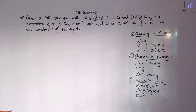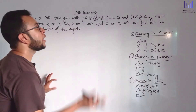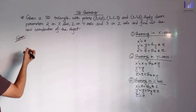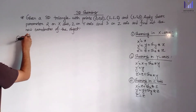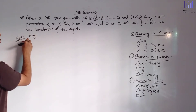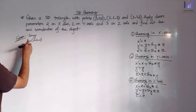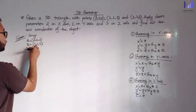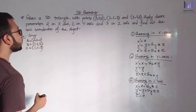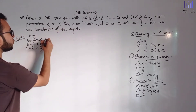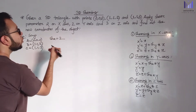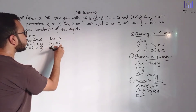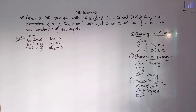Now a numerical example: given a 3D triangle with points — A equals (0, 0, 0), B equals (1, 1, 2), C equals (1, 1, 3). Apply shearing parameters on X-axis equals 2, on Y-axis equals 2, and on Z-axis equals 3. Find out the new coordinates of the object.